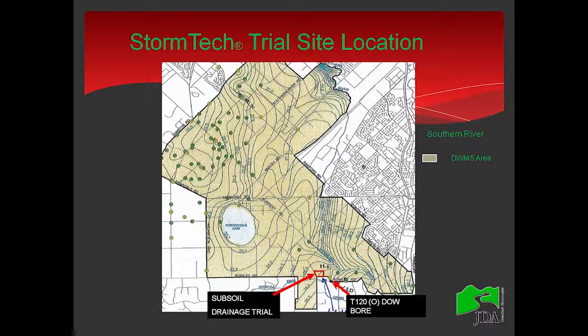The trial site is located in the City of Armadale, 30 km away from Perth. From the map, you can have a look at the isopotential lines for the groundwater contours for the Southern River District Water Management Strategy. The site is here, and the contour returns a value of 25 meters Australian Height Datum. The green dots are the private bores, whereas the yellow dot is the DOW bore, which played a key role in the validation of the theory of a perched water table.